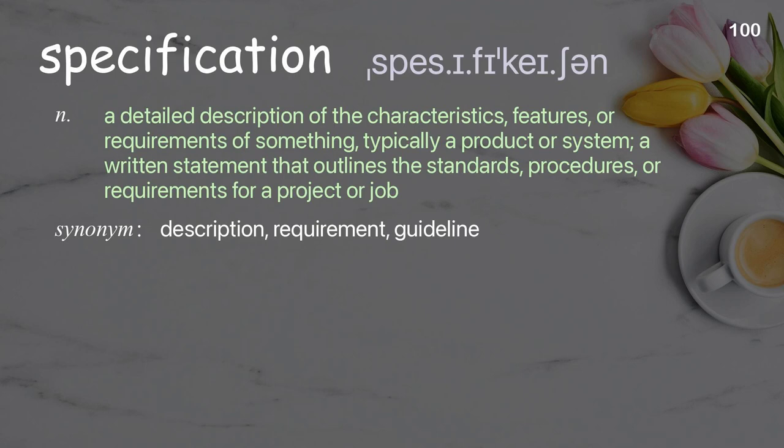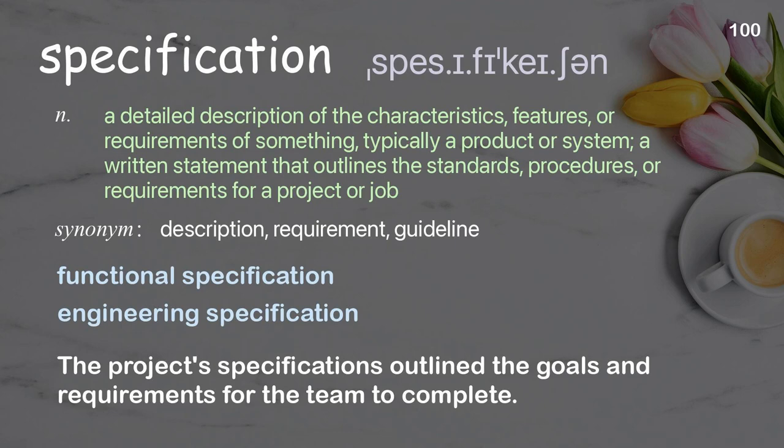Specification: a detailed description of the characteristics, features, or requirements of something, typically a product or system; a written statement that outlines the standards, procedures, or requirements for a project or job. Examples: functional specification, engineering specification. The project specifications outline the goals and requirements for the team to complete.